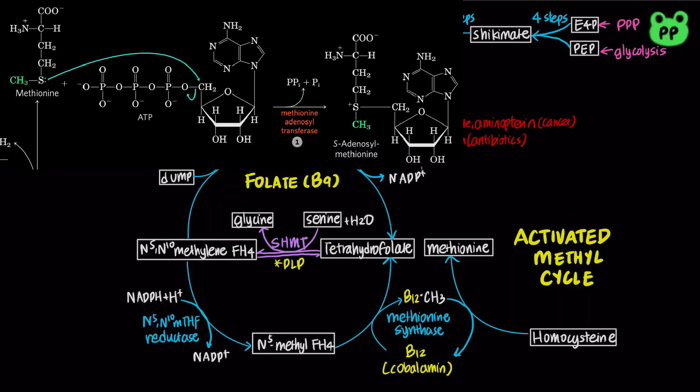Methionine can be converted to S-adenosylmethionine by the enzyme methionine adenosyltransferase, in which the nucleophilic sulfur atom of methionine attacks the 5-prime carbon of the ribose moiety of ATP, releasing inorganic pyrophosphate and phosphate.